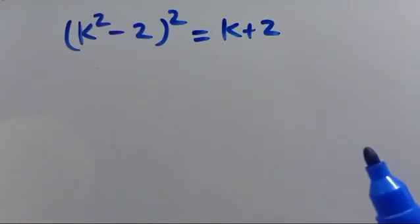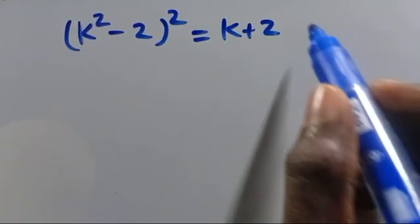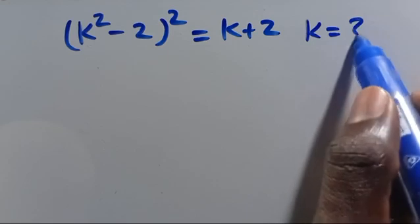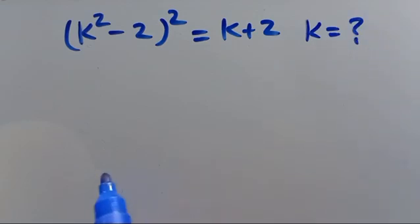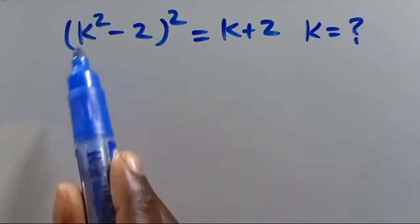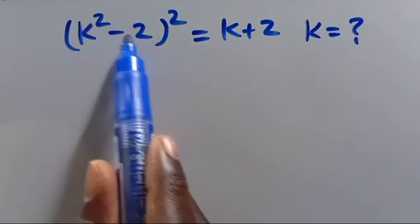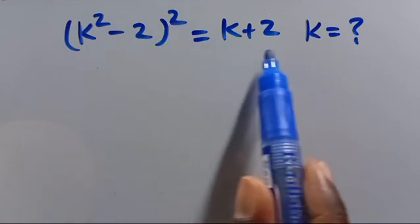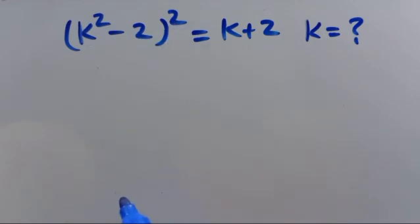What is the value of k, given that (k² - 2)² = k + 2?